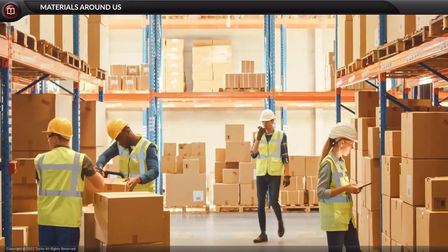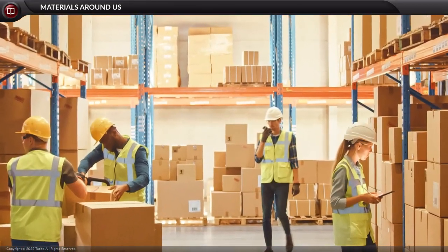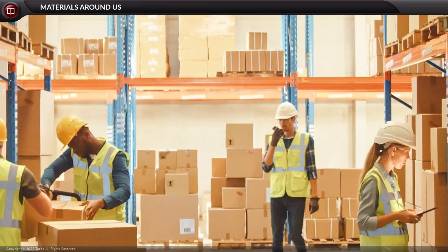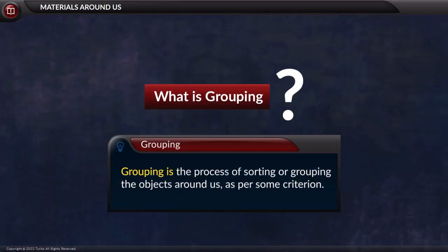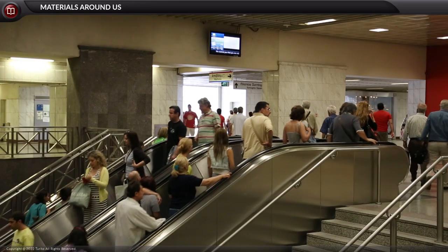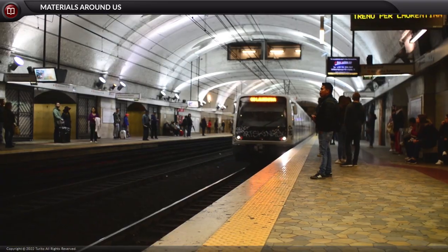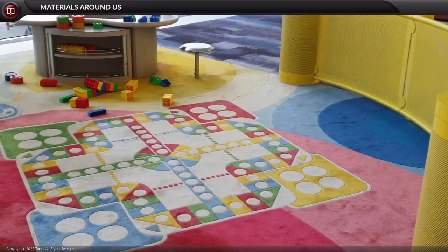To understand the sorting of materials into groups, let us get acquainted with the term grouping. What is grouping? Grouping is the process of sorting or grouping the objects around us as per some criterion.